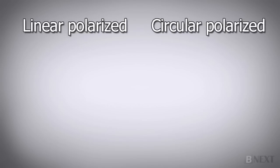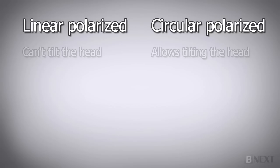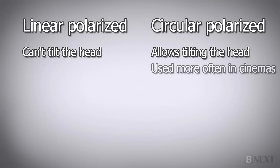There are two main types of polarization, linear and circular. The circular type of polarization allows a viewer to tilt their head more than with the linear system, without losing the 3D effect. This is why it is used more often in cinemas and with some 3D TVs.